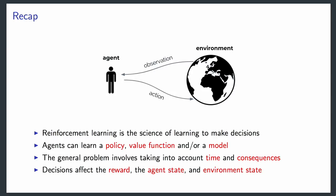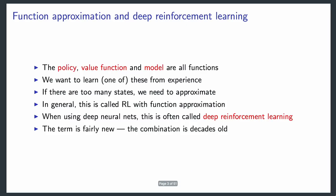I want to highlight that all of these things—a policy, a value function, or a model—are functions. Each one is a mapping: the value function maps from a state to a value, or a state-action pair to a value in the case of action values. A model maps from a state to a next state, and a policy maps from states to actions.